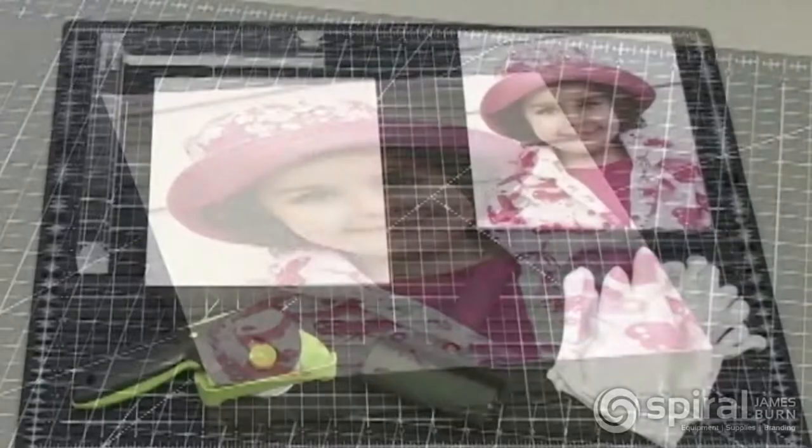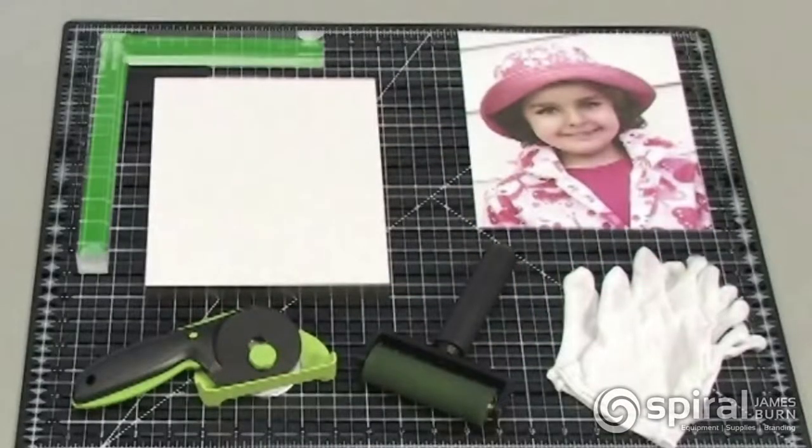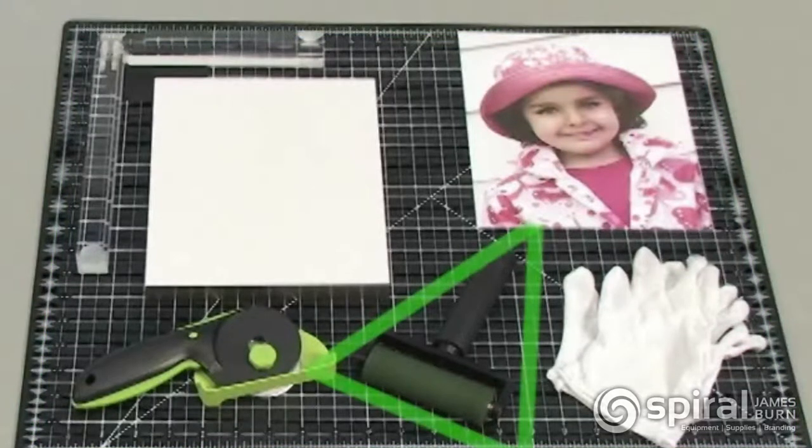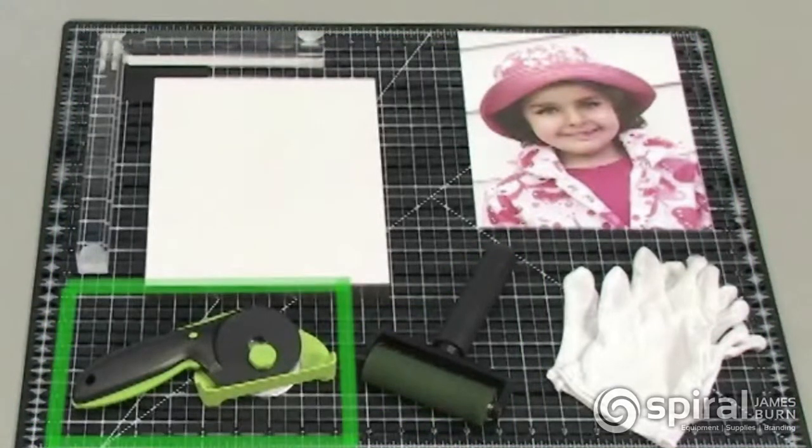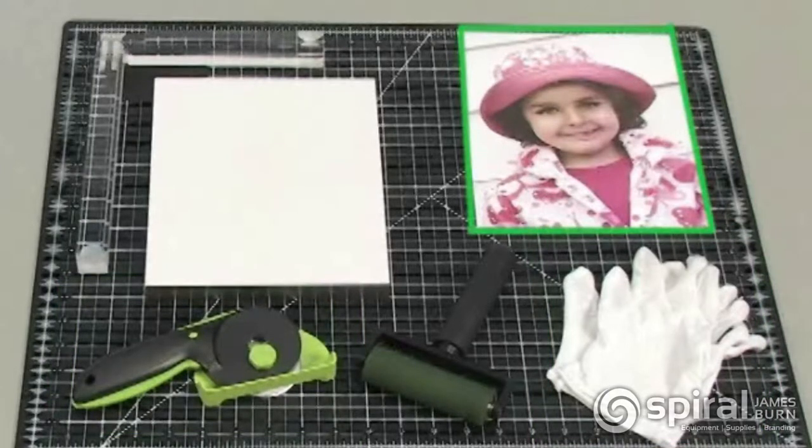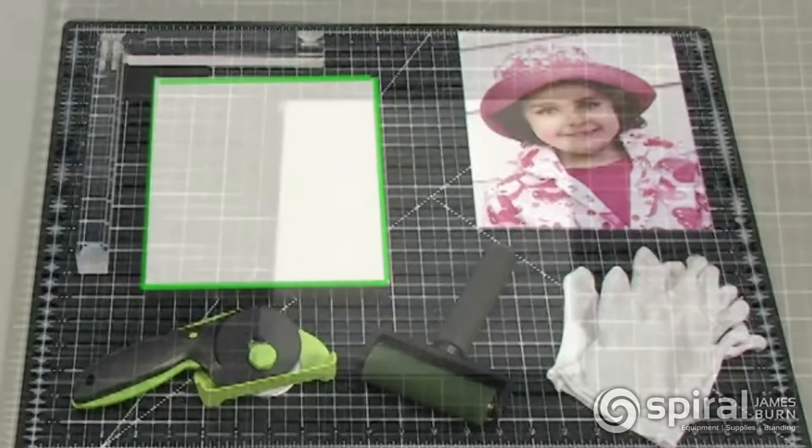Assembling a Mounted Photo. Equipment and Supplies: Assembly Jig, Self-Healing Cutting Mat, 4-inch Roller from Faux Canvas Kit, Rotary Photo Cutter, Photo Gloves, 5x7 or 8x10 Print, and Mounted Photo Frame.